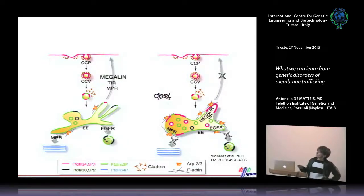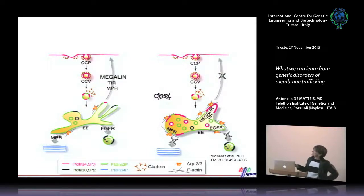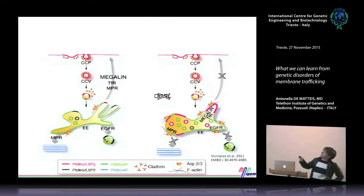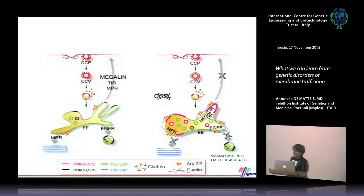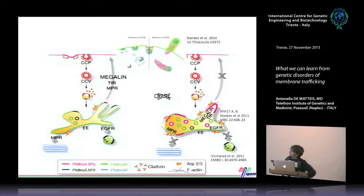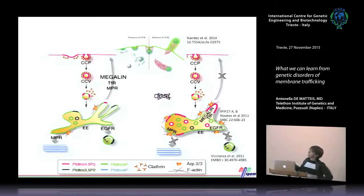What happens is what we have defined as a traffic jam — and being in Naples makes that a rather direct analogy. There is no problem in internalizing the ligand or receptor, but the problem is in exiting the early endosome. Subsequent papers from other groups working on OCRL confirmed that this is the case also for other receptors and other systems.